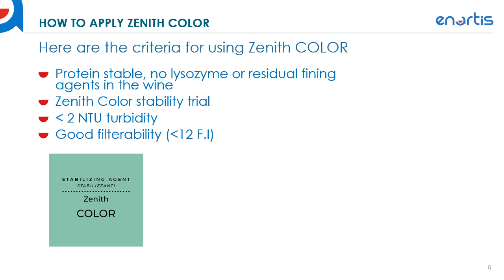Zenith Color stability trials are super easy to do and I'll go over how to do those trials in a couple of minutes. Zenith Color needs to be applied to clarified or filtered wines — wines that are less than 2 NTU turbidity. Zenith is usually applied just before bottling after you've done most of your filtration. If you're doing pad filtration or crossflow filtration, typically you would add Zenith Color just before bottling after filtration. We also recommend good filterability on your wines — less than 12 on the filterability index — and I'll go over how to do filterability checks later in this presentation.